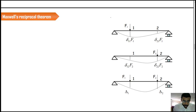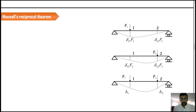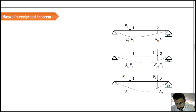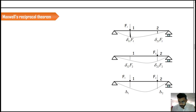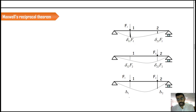If we take the case of a beam where two loads F1 and F2 are applied, we can say that some deflection has happened due to the application of load at the location of 1, and simultaneously we have a deflection at 2 as well. Similarly, when you apply a load F2, we have a deflection at 2 as well as a deflection at 1.